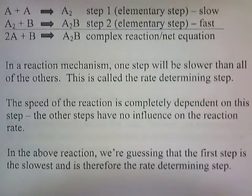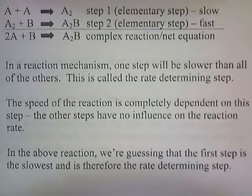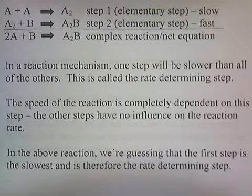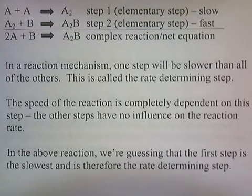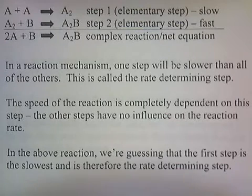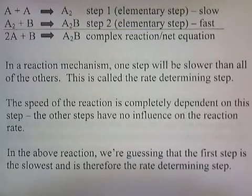In a reaction mechanism, one step will be slower than all of the others — this is called the rate determining step. The speed of the reaction is completely dependent on this step; the other steps have no influence on the reaction rate. In the above reaction, we're guessing that the first step is the slowest and is therefore the rate determining step.